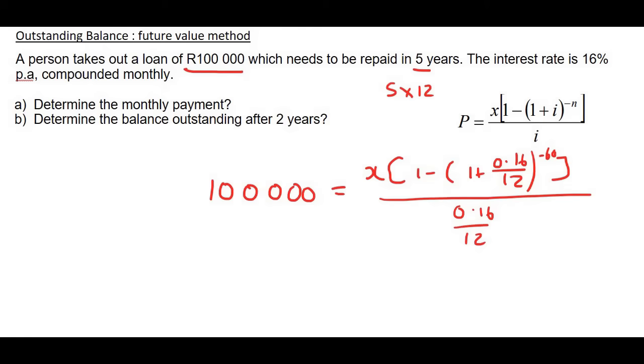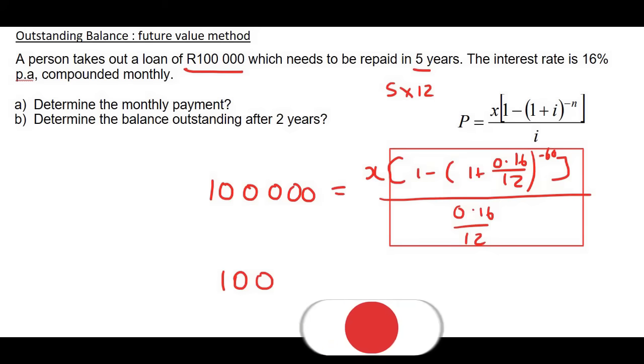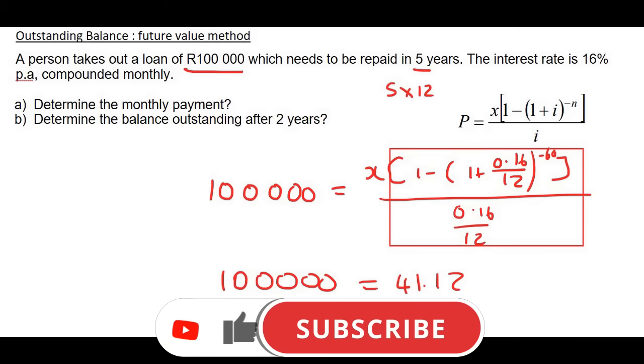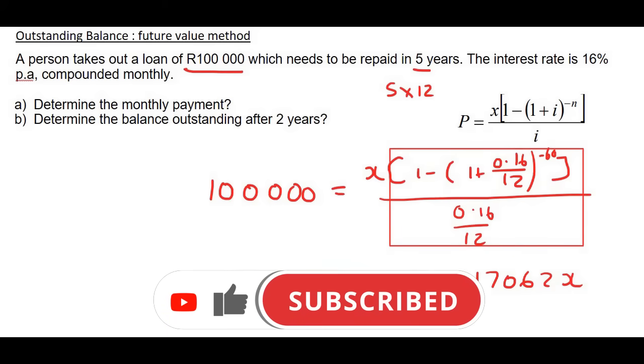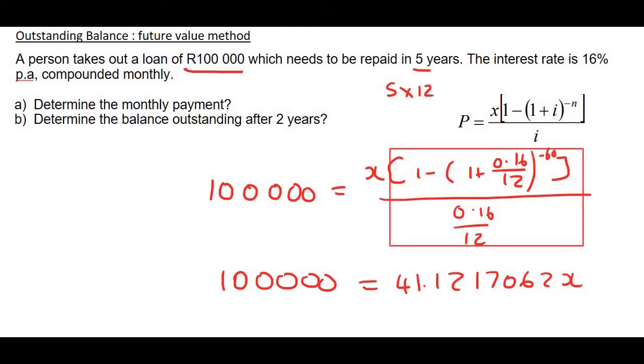Then to solve this, there's many ways you could do it. But one way is to put all of this on the calculator, but then don't round off. That's going to be 41.1217062x. And then you could get x alone by just saying 100,000 divided by answer on your calculator. So x would be 2431.81 if you round to two decimal places.